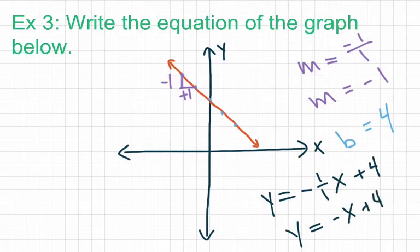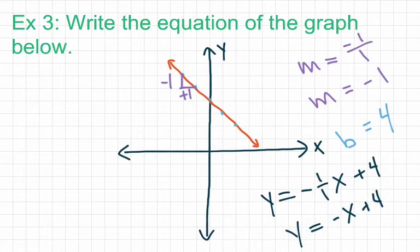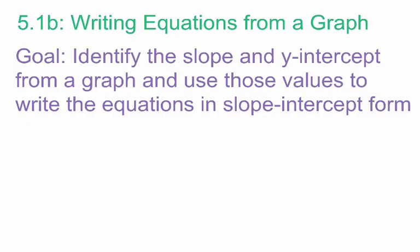If I were giving you a handwritten quiz or test and you wrote negative 1 over 1 times x, I would not mark it wrong. However, the HRW textbook may want the simplified form. So that's all we've got for this lesson — three quick examples. When I check your notes, I want to see all the graphs and all the writing for this lesson. The goal is to identify slope and y-intercept from a graph and use those values to write the equation in slope-intercept form.